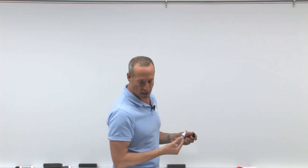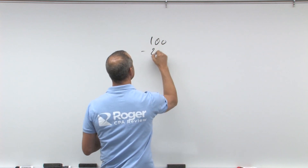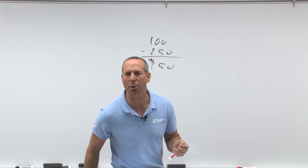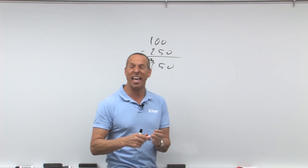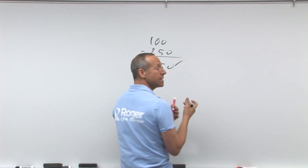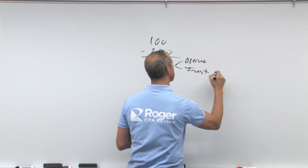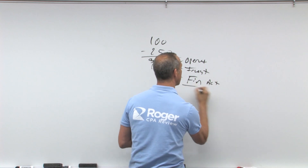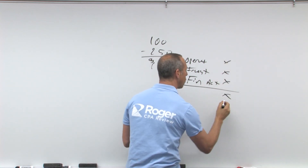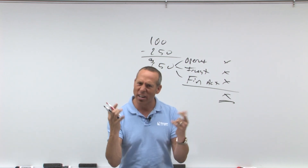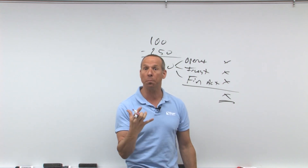It tells you how much cash you have at the beginning and how much at the end, and the difference is the increase or decrease in cash. For example, at the beginning of the year you had $100; at the end of the year you have $250. That means you've got $150 more cash. Your job is to figure out where that cash came from — whether from operating activities, investing activities, or financing activities. That's the purpose of the statement of cash flows.